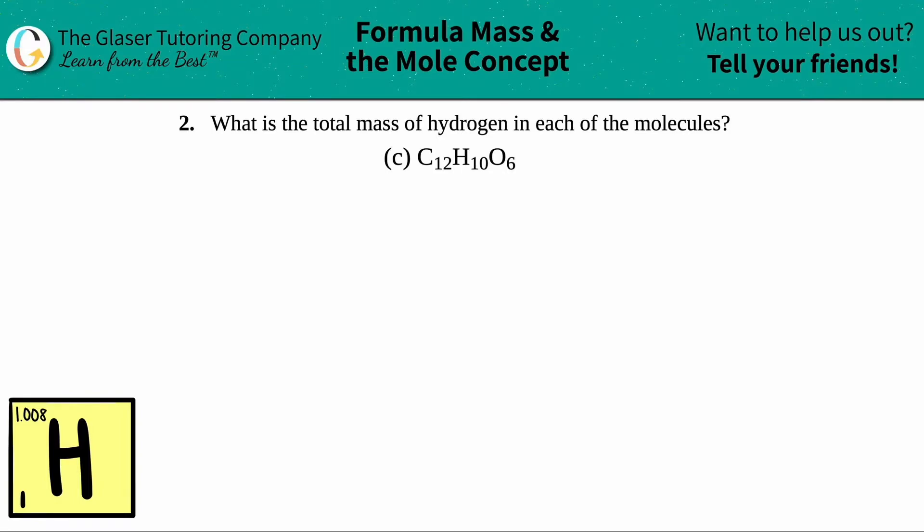Number two, what is the total mass of hydrogen in each of the molecules? And then we have letter C. So in this case, we have to find out the total mass of hydrogen in C12H10O6. So I'm just going to rewrite this again. C12H10O6.